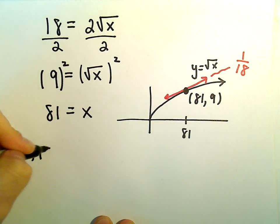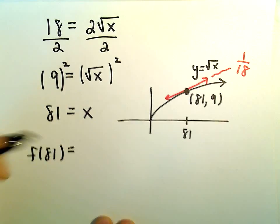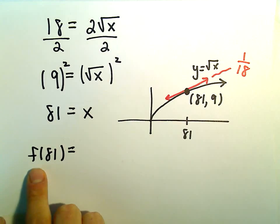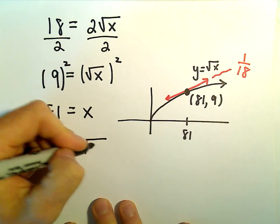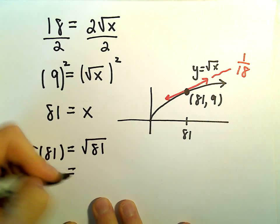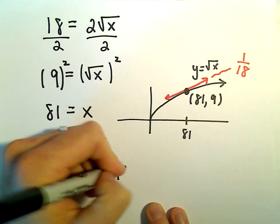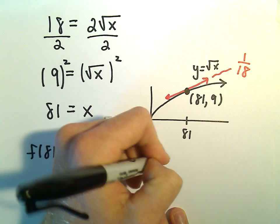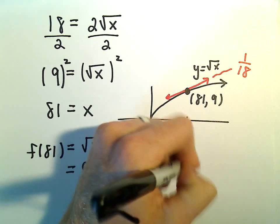So all we're doing is taking our x-coordinate. We're not putting it into the derivative, but we're putting it into the original function. If you take the square root of 81, we get 9. So the point we're looking for is (81, 9).